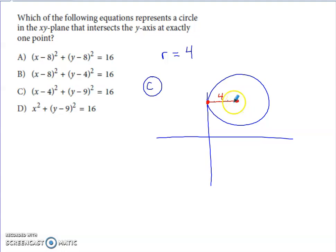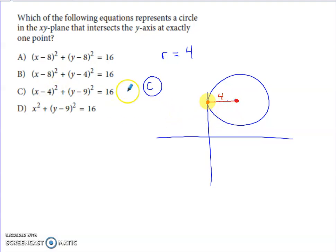I need the center to be 4 units away from the Y-axis — either 4 units to the right or 4 units to the left. A circle with radius 4 centered exactly 4 units from the Y-axis will hit it in exactly one spot. Option C specifies the X-coordinate of the center is positive 4, so it hits the Y-axis at exactly one point. The Y-axis is tangent to the circle.